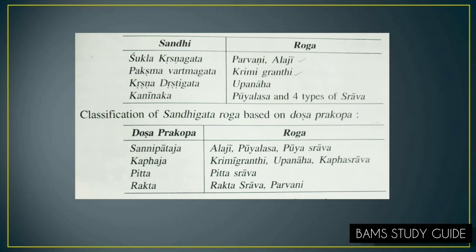Classification based on Dosha Prakopa: Alaji, Pooya Alasa and Pooya Strava are Sannipataja. Krimigrandhi, Uppanaha and Kapha Strava are Kaphaja. Pitta Strava is Pittaja. Rakta Strava and Parvani are Raktaja.